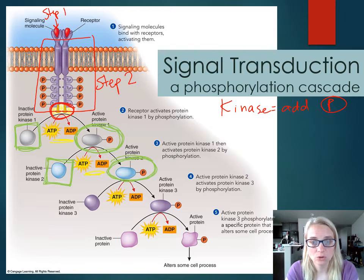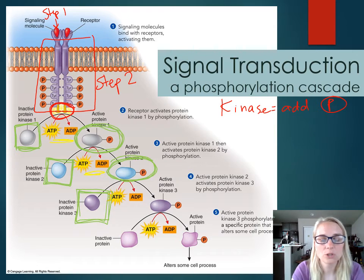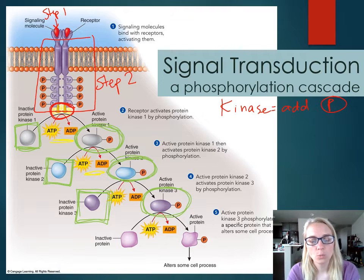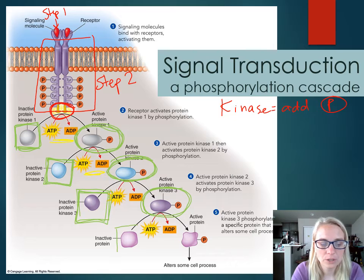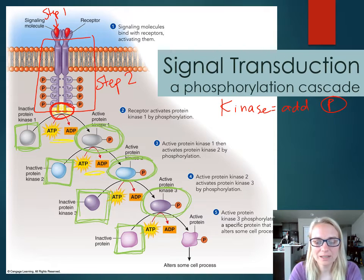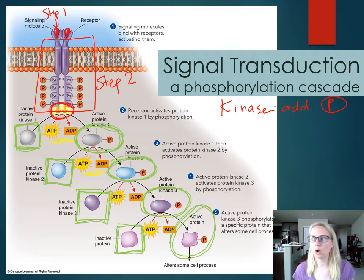Active kinase one activates kinase two with a phosphate group, giving us our new active kinase. Every single time we are burning a molecule of ATP — the high energy battery — breaking that off and adding the phosphate and energy onto the new molecule. So we've activated kinase one, active kinase one activates kinase two, active kinase two activates inactive kinase three, which turns into active kinase three. This is the cascade: activate the first, which activates the second, which activates the third. The final target doesn't necessarily have to be a kinase — it could be any inactive protein that becomes active.